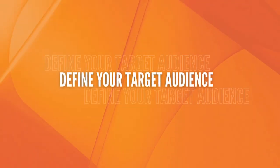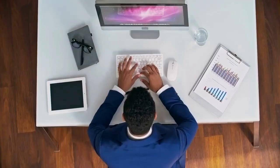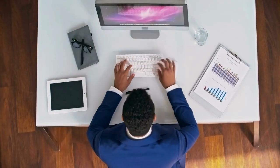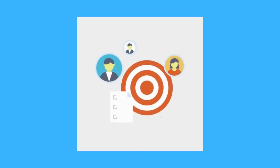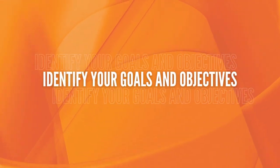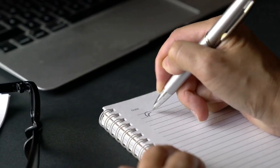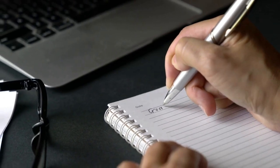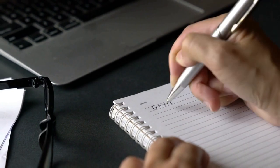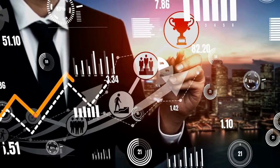1. Define your target audience. Research your target audience to determine what they are looking for and what problems they need to solve. 2. Identify your goals and objectives. Decide what you want to achieve with your content marketing, whether to increase brand awareness or generate leads.